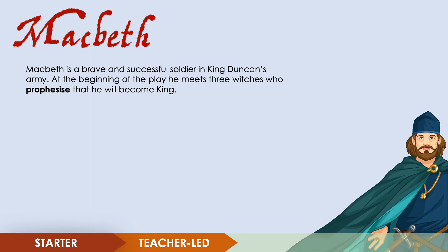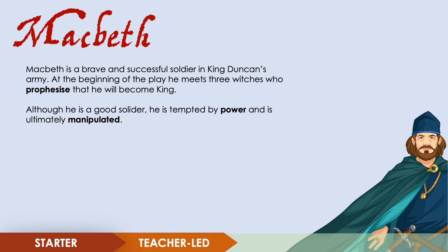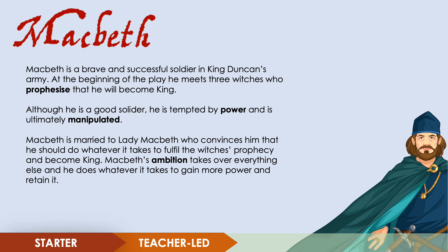Macbeth is a brave and successful soldier in King Duncan's army. At the beginning of the play he meets three witches who prophesise — meaning tell someone what will happen in the future — that he will become king of Scotland. Although Macbeth is a good soldier, he is tempted by power and ultimately manipulated by women: Lady Macbeth and the witches, possibly referencing King James I's own difficult relationships with women. Lady Macbeth convinces him to do whatever it takes to fulfil the witches' prophecy. Macbeth's ambition takes over everything else, and his thirst for power overshadows the love he has for his wife and the honour he had at the start of the play.